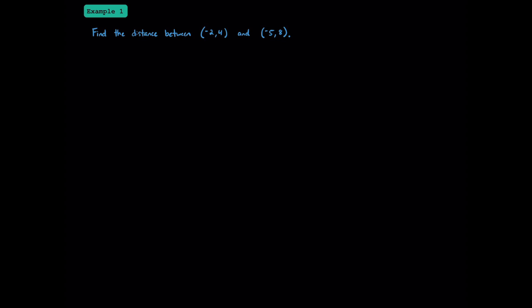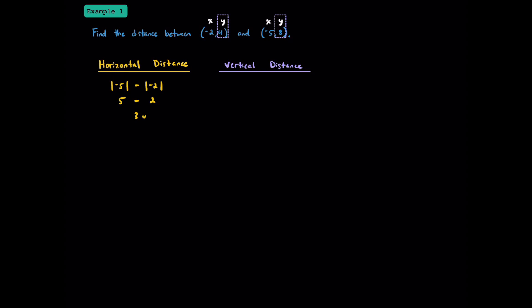Here we're going to find the distance between negative 2 comma 4 and negative 5 comma 8. This is an x and a y, and this is also an x and a y. To find the horizontal distance, we use the x-coordinates. Since they're both negative, we take the absolute value of negative 5 and subtract the absolute value of negative 2. The absolute value of negative 5 is 5, and the absolute value of negative 2 is 2 — 5 minus 2 is 3 units. Since the y-values are both positive, we subtract their absolute values. The absolute value of 8 is 8, and the absolute value of 4 is 4 — 8 minus 4 is 4 units.